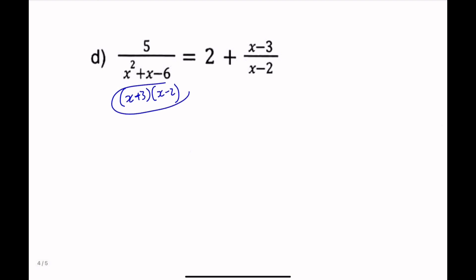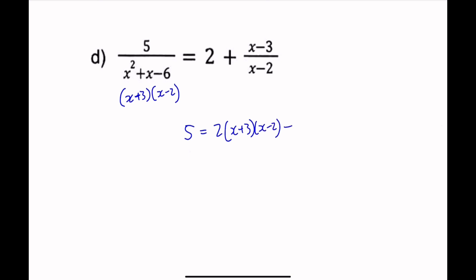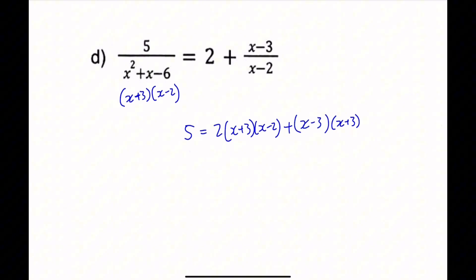If we multiply (x+3)(x-2) to everything, the left side simplifies to just 5. On the right side, 2 times (x+3)(x-2), and then the (x-2) terms cancel for the second fraction, leaving x minus 3 times x plus 3. So we have 5 equals 2(x+3)(x-2) plus (x-3)(x+3), which expands to 2(x squared plus x minus 6) plus x squared minus 9.